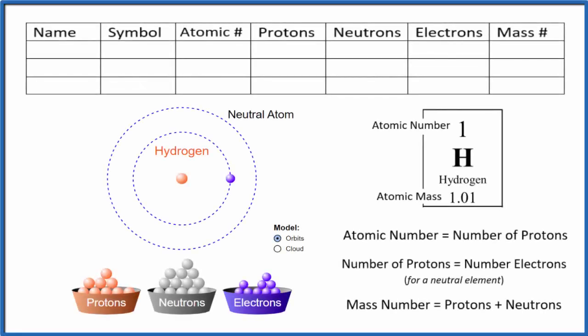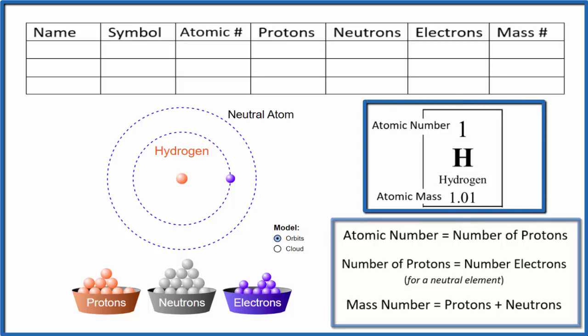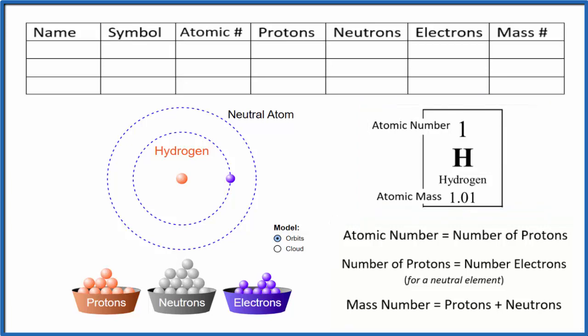In this video you'll learn how to find the protons, neutrons, electrons, and mass number for the element hydrogen. We'll use these rules here, the periodic table, and then we'll try to visualize what's happening to help us really understand and remember. Let's get started.